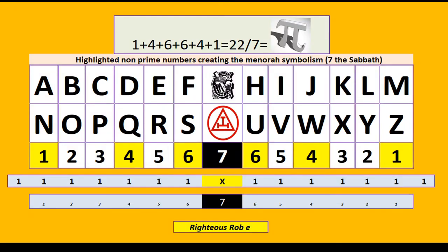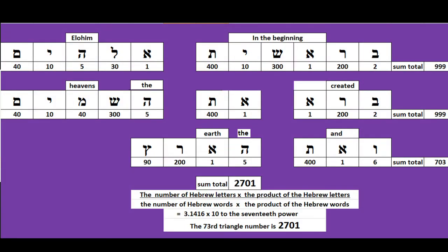Using the English septenary cipher, Jesus has a sum total letter value of 99. And 2701 equals Genesis 1 verse 1, the very first verse of the Bible.